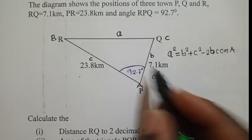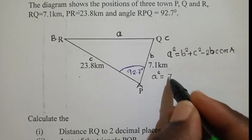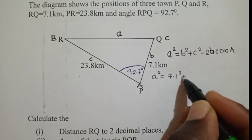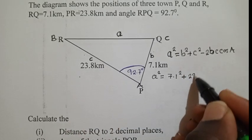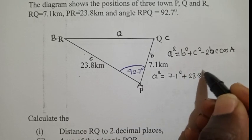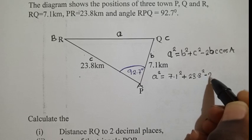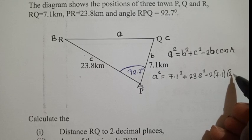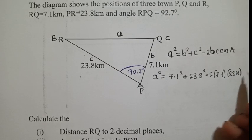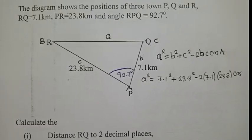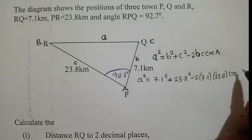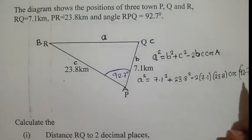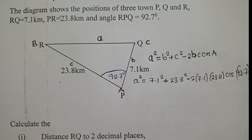For the B, we know that B is a side. It's 7.1². We say plus our C, 23.8². Minus 2, 7.1, 23.8. And then we say plus the angle here. So what is our angle? It's 92.7 degrees. So we say cos 92.7 degrees.